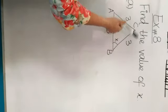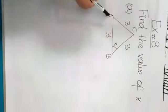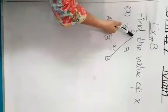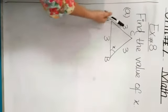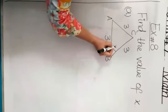Exercise 8, find the value of x. So it is a triangle A, B and C. All 3 sides are equal. We have to find the value of x.